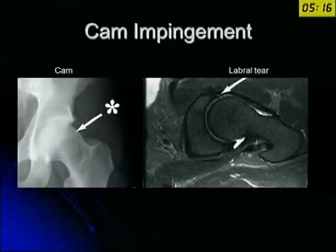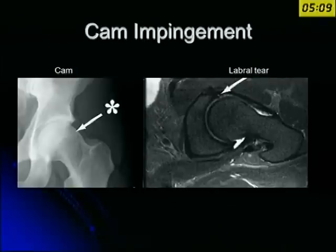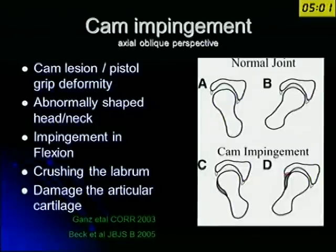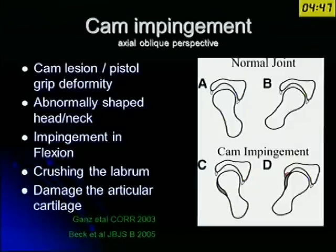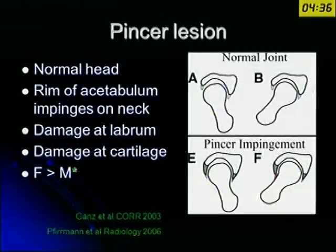This is a photograph of a 40-year-old lady with hip pain not relieved by conservative treatment. On X-ray you can see the bony bump or deformity, and in the same patient an MRI clearly showed a labral tear. In axial oblique perspective, cam lesions typically show a pistol grip deformity of the head, and the impingement occurs in flexion, impinging against the edge of the acetabulum, leading to crushing of the acetabular rim, damage to articular cartilage, and ultimately arthritis. In a pincer lesion, the shape of the head may be normal but the edges of the acetabulum impinge against the neck, leading to the same mechanism of labral and cartilage damage.